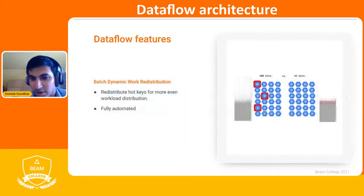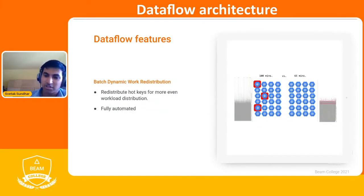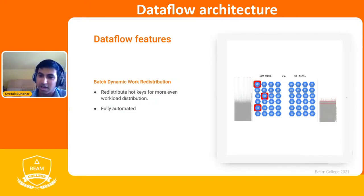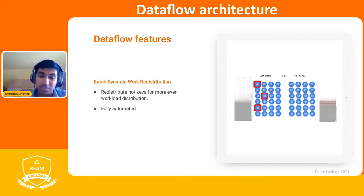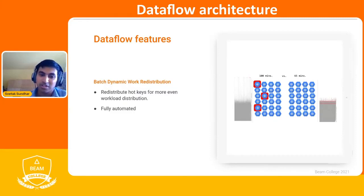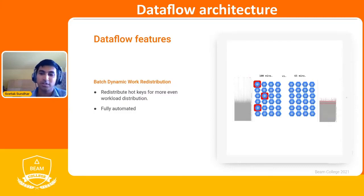In distributed data processing, there's a common problem called the hotkey issue. Your primary worker leases out work to secondary workers, but sometimes it will assign a lot of work to one secondary worker and not enough to others, causing an imbalance that delays parallelization and hinders job performance. To address this, we've introduced a feature called batch dynamic work distribution, which automatically redistributes hotkeys for better workload distribution.